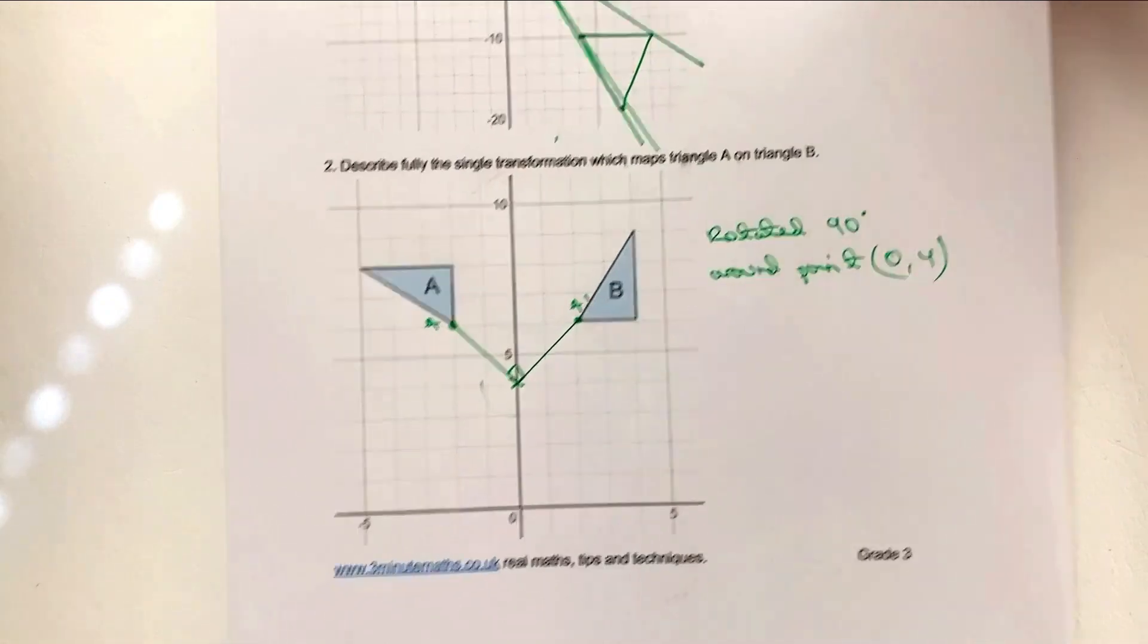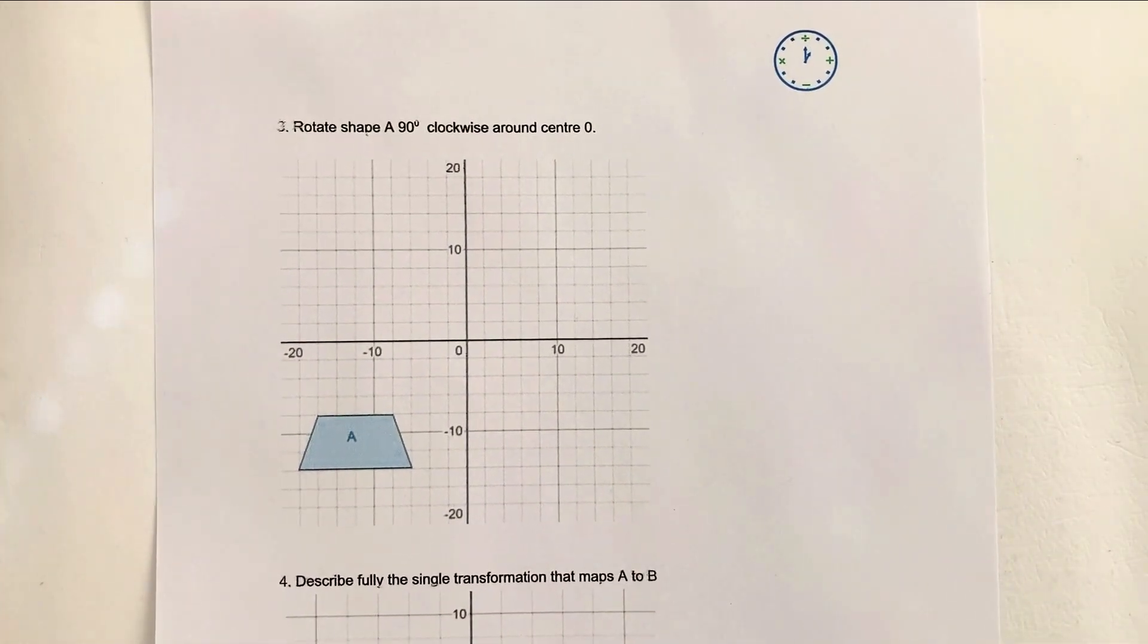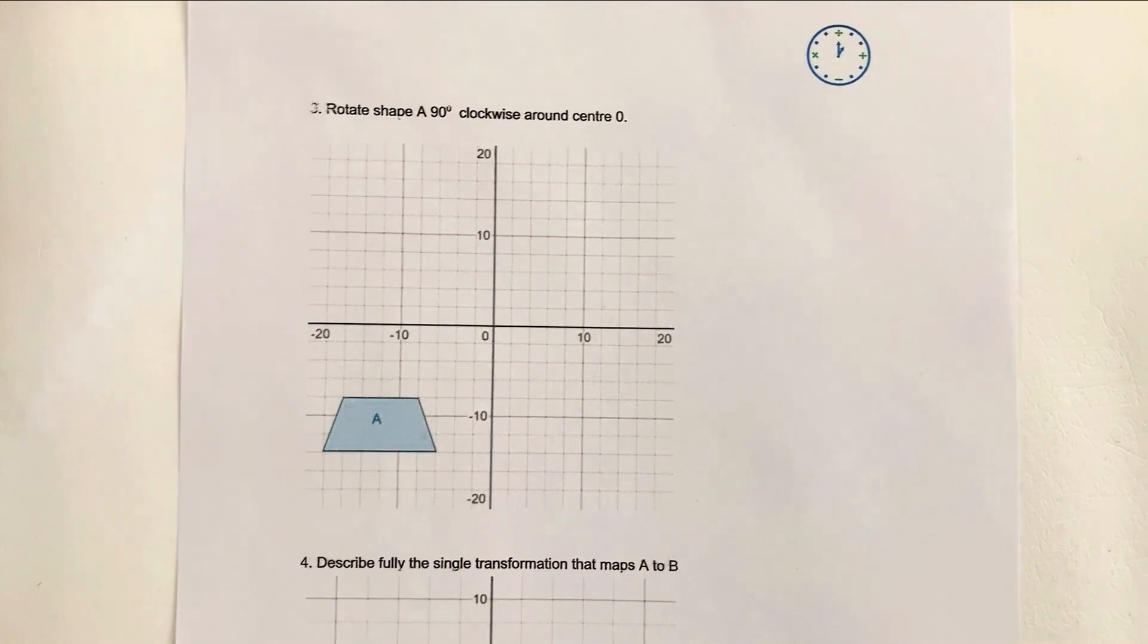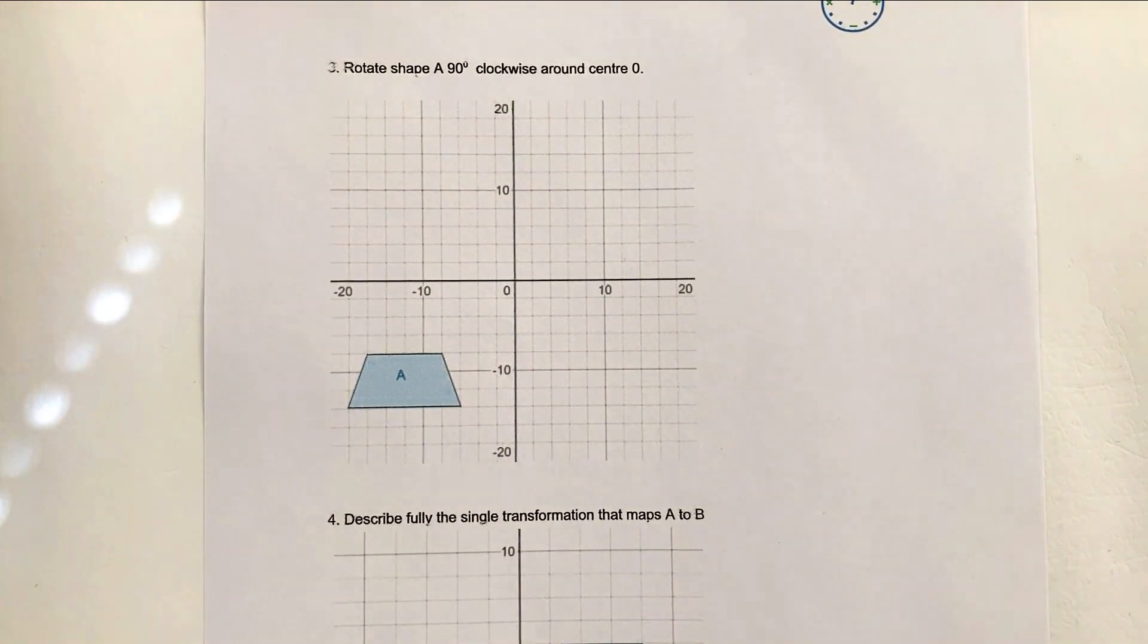So the next point, this is the next question is going to be question number three. And this is rotation 90 degrees clockwise around the center zero. Well, the center zero is fairly OK for us. But again, I'm just going to use a little bit of tracing paper in order to be able to figure this one out. So what I'll do is just prepare myself some. All right.